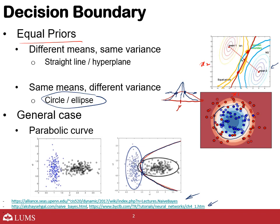In this general parabolic case, you will get ellipses in one special case and just a straight line in another special case. So the decision boundary ranges from parabolic in the general case to elliptical/circular or straight line depending on the conditions.